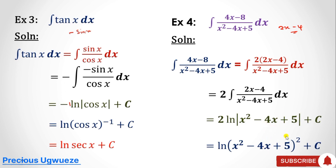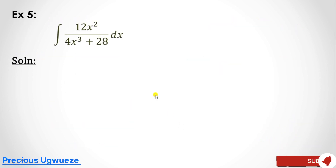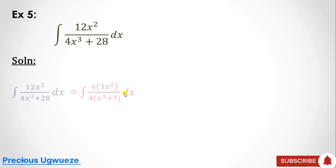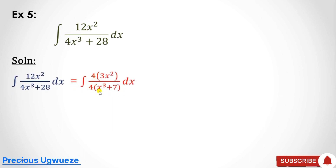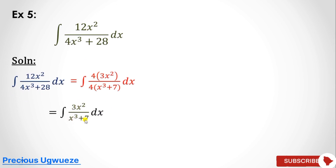In the next example, there is something common in the numerator and denominator, so we simplify by cancelling the common factor of 4. After cancellation, the derivative of the remaining denominator is exactly 3x², matching the numerator. So the solution is immediately the natural log of the denominator plus C.